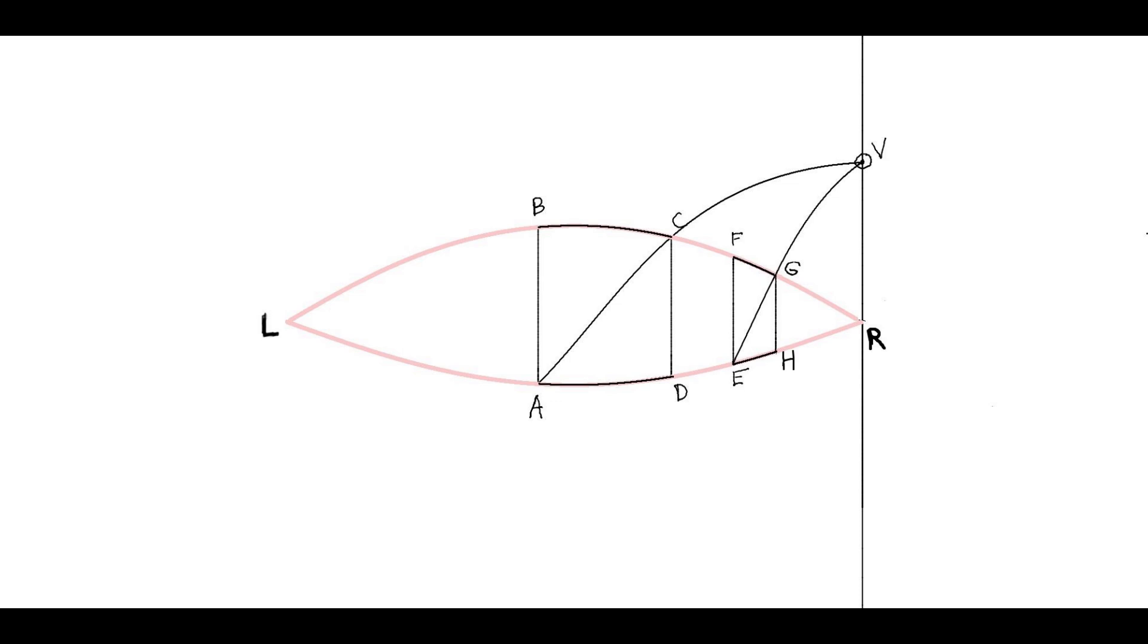The reason is this. The point V is the vanishing point of line AC, that is of the diagonal of the first rectangle. If you accept this then we're done. Because the second diagonal line EG is parallel to the first since the two lines have the same vanishing point V and lines with the same vanishing points are parallel.